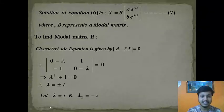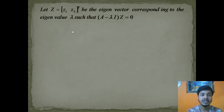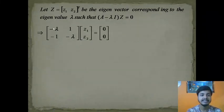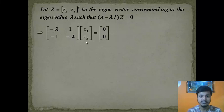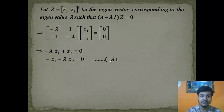Since the eigenvalues are complex, let z = [z₁, z₂]ᵀ be the eigenvector corresponding to eigenvalue λ, such that (A − λI)z = 0. Expanding this system gives two equations: −λz₁ + z₂ = 0 and −z₁ − λz₂ = 0. We call this set of equations (a), and will now solve for eigenvectors for λ₁ and λ₂.